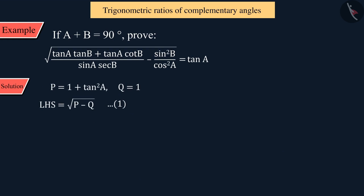Substituting the values of P and Q thus obtained into equation 1, we get square root of 1 plus tan squared A minus 1. On solving this, the value of the left side is tan A, which is equal to the right side of the given equation.